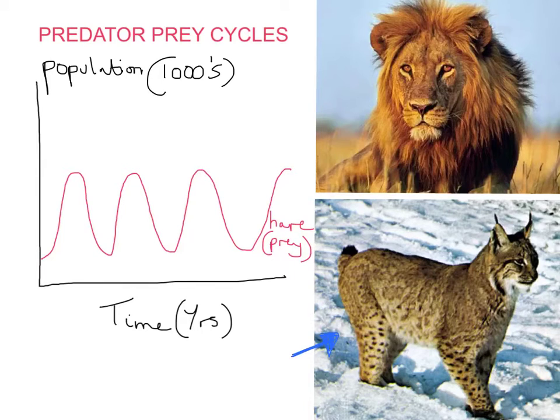And what we find is that there's a sort of delay, if you like, between the two kind of graphs. The cycles appear to be out of phase with each other. So a peak in one population is followed later by a peak in another. So it's a little bit like that.